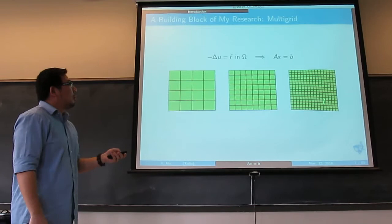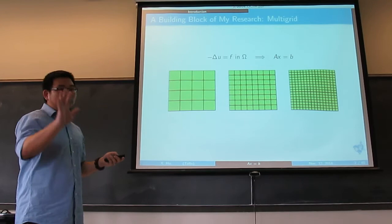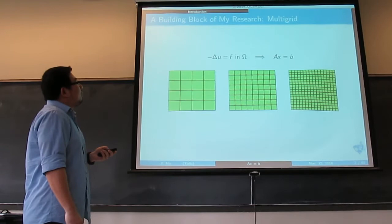It's called multigrid, so you need several levels of different grids. I'm solving the problem on the finest grid, but I start with a coarse grid, go to a finer one, and go to the finest grid. The solution I'm interested in is on this finest grid, but I still need the coarser levels because I want to use multigrid.